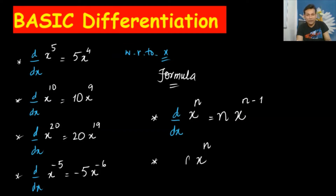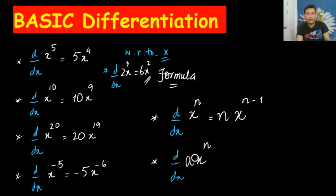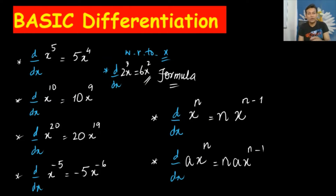We can extend the formula when there is already a coefficient: for example, d/dx of 2x to the power 3. The power 3 becomes the coefficient, but you multiply it by the existing coefficient 2, giving 6. The new power is 3 minus 1, which is 2. So the answer is 6x². The general formula is: d/dx(a·xⁿ) = a·n·xⁿ⁻¹.